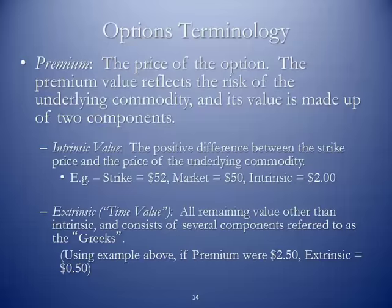The premium is the price of the option. The premium value reflects the risk of the underlying commodity and is made up of two components. Just as in the lesson notes where I talked about car insurance and a premium, the premium is what it will cost you to have this type of risk insurance. There are two pieces: the intrinsic and the extrinsic. The intrinsic is the embedded value — the positive difference between the strike price and the price of the underlying commodity. For example, if your contract sets a strike price of $52 and the current market is $50, the intrinsic value is $2, so the premium would be at least $2.